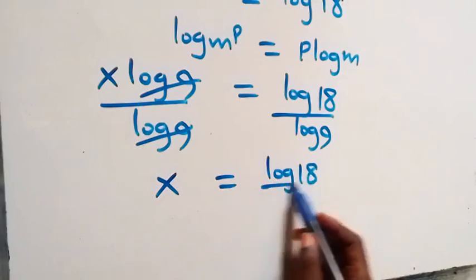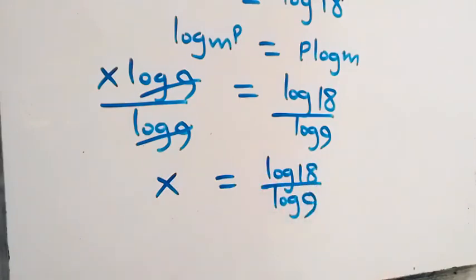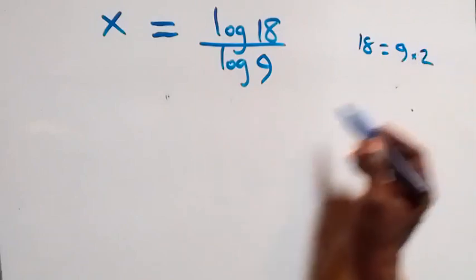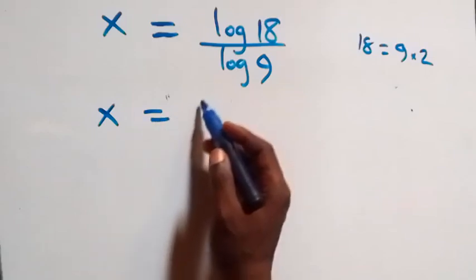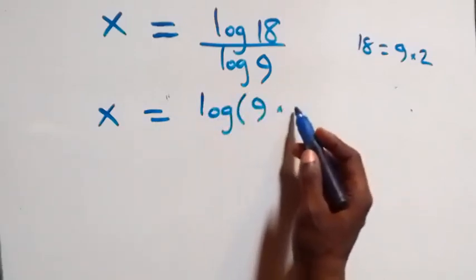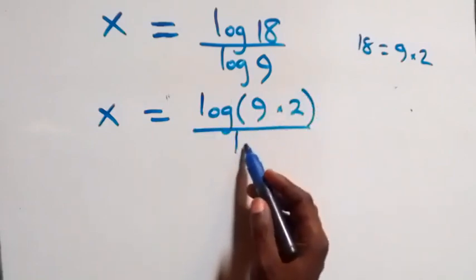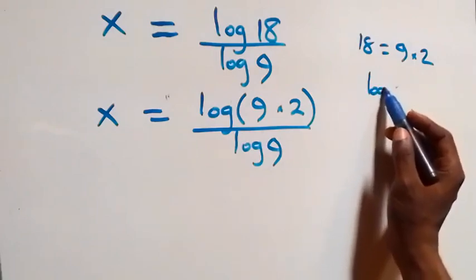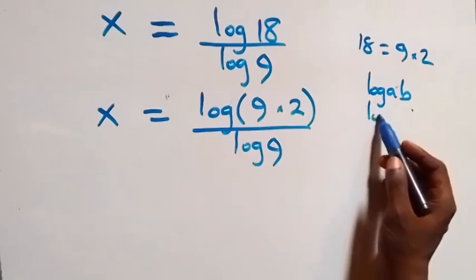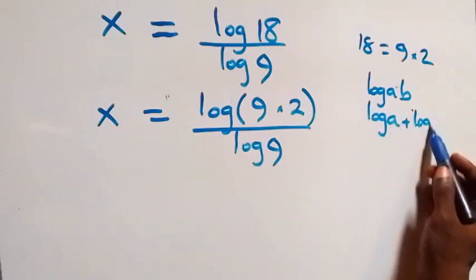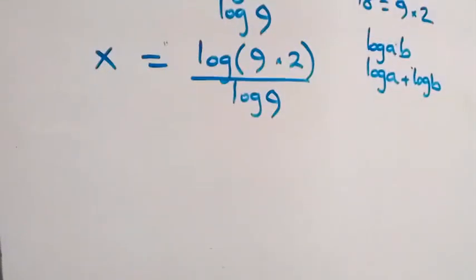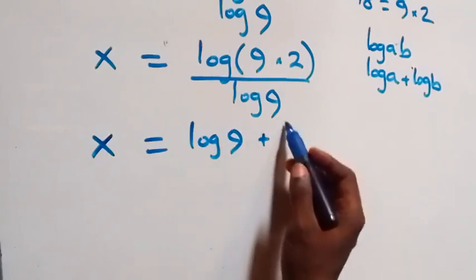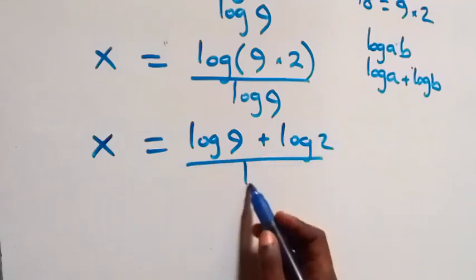So we have x equals log 18 over log 9. We can express 18 as 9 times 2, so x equals log(9 times 2) over log 9. This follows the logarithm product law, where log(a·b) equals log a plus log b, giving us x equals (log 9 plus log 2) over log 9.